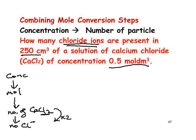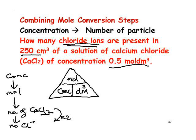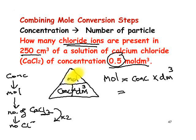There are probably three things we've got to do. First, take the concentration and change it into moles. Then change moles into number of CaCl₂. Then, since it asks for chloride ions, multiply by 2 because every calcium chloride has two chloride ions. The first thing is to get moles from concentration and volume. Concentration is expressed in moles per cubic decimetre. This time we're looking for moles, so we cover moles in the triangle.